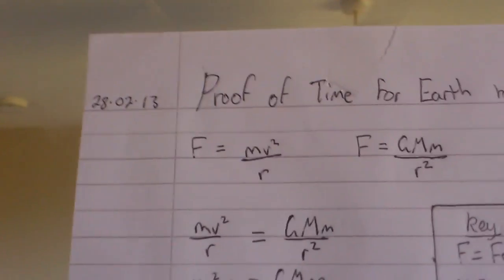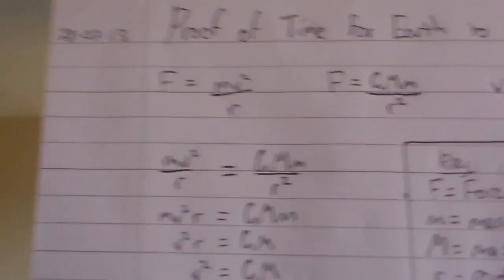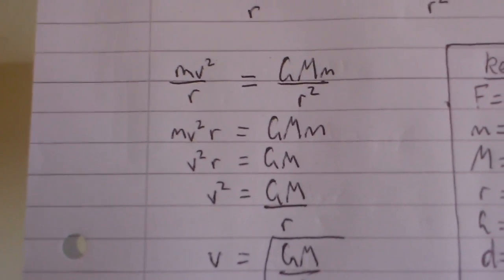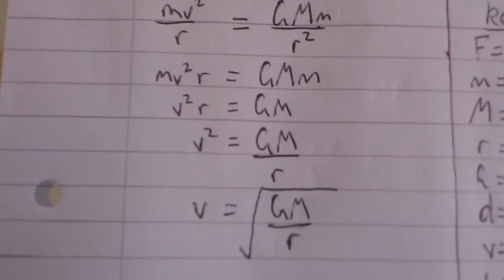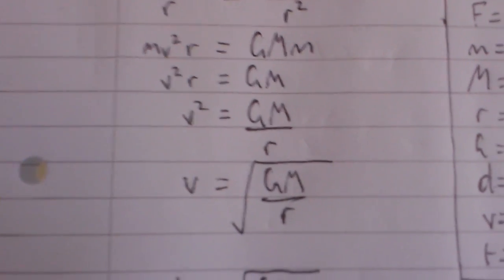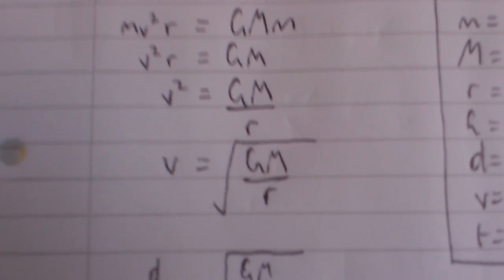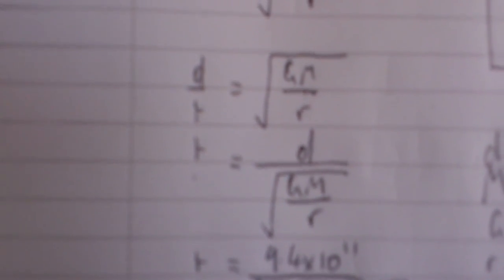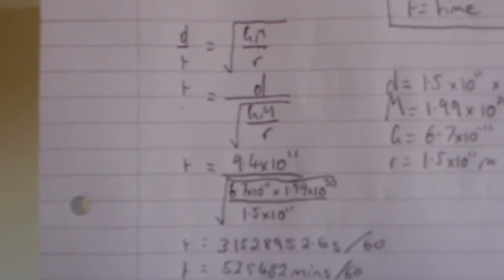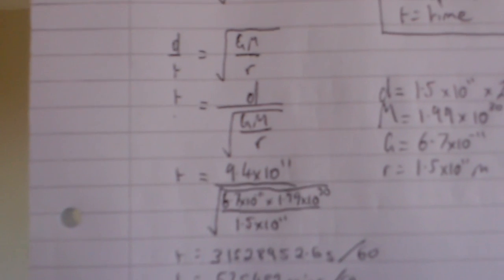So the first thing you have to do, since F has two equations, you can make them equal each other. Then times out the R's and you can cancel off the M's on both sides. You're left with V squared R equals GM. Take R over to the other side by dividing it. Then take the square root of both sides to get that equation. So you've got V. And now you've got two equations that equal V. Make them equal each other. D over T. Rearrange for T. So T equals the circumference over the square root of the gravitational constant times the mass of the Sun over the radius of the Earth.